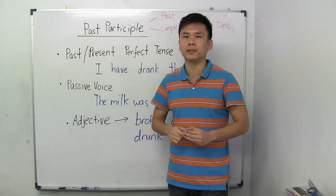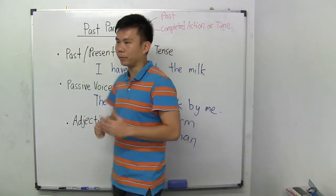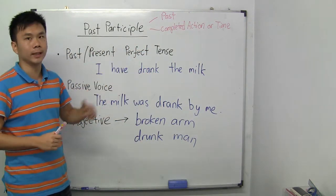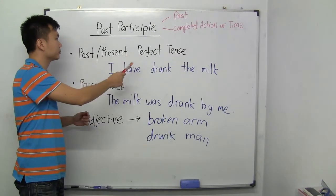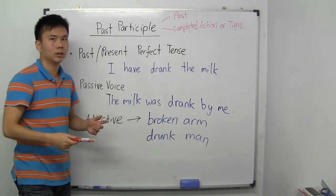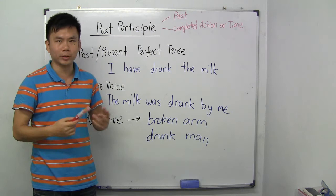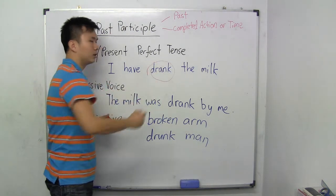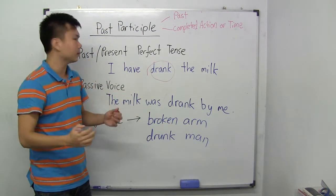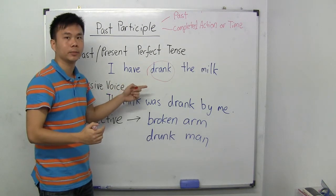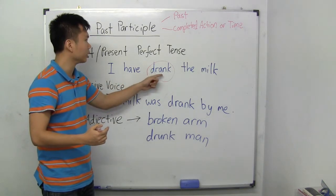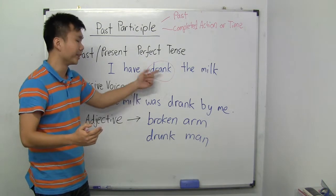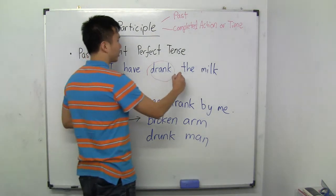So when do you use the past participle? We use it in the past or present perfect tense, as you can see in this question: 'I have drank the milk.' To many people this may seem correct, but in this case it's present perfect tense. In present perfect tense you do not use the past tense 'drank' — you want to use 'drunk.'